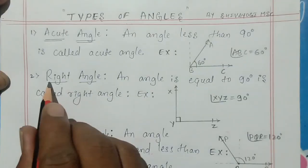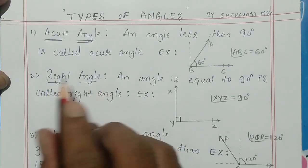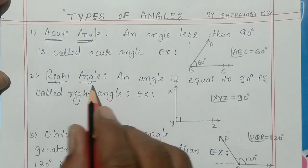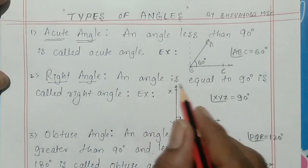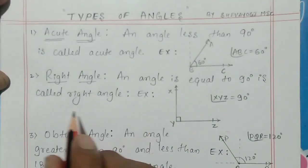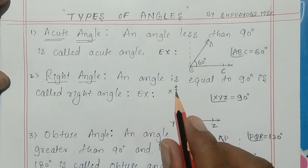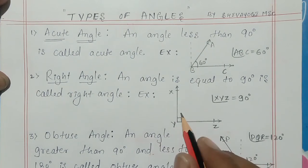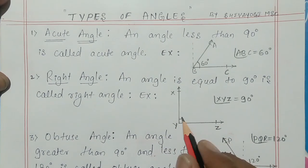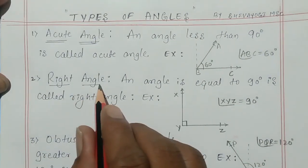Next is right angle. What does right angle mean? An angle equal to 90 degrees is called a right angle — an angle which is exactly 90 degrees is said to be a right angle.